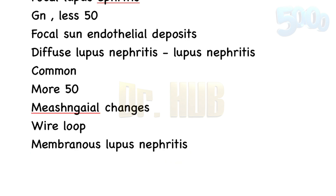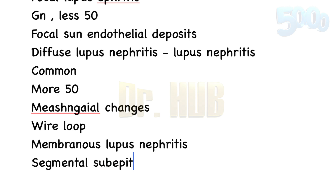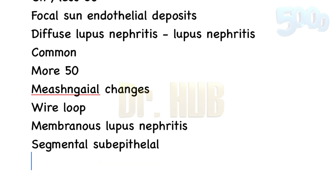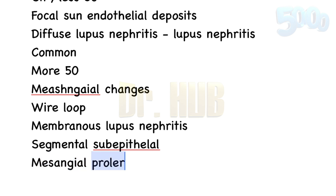Class 5 is membranous lupus nephritis. There are global and segmental subepithelial immune deposits, and this can occur with or without mesangial proliferation.